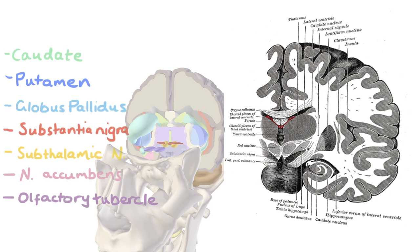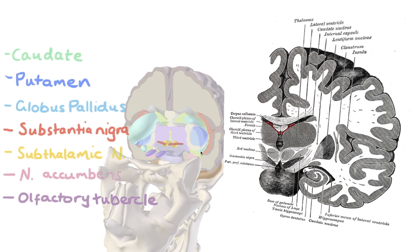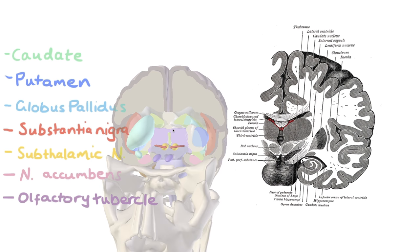The caudate—we can only see a little bit of it, superior and inferior. In actual fact, it's curving around the lenticular nucleus.